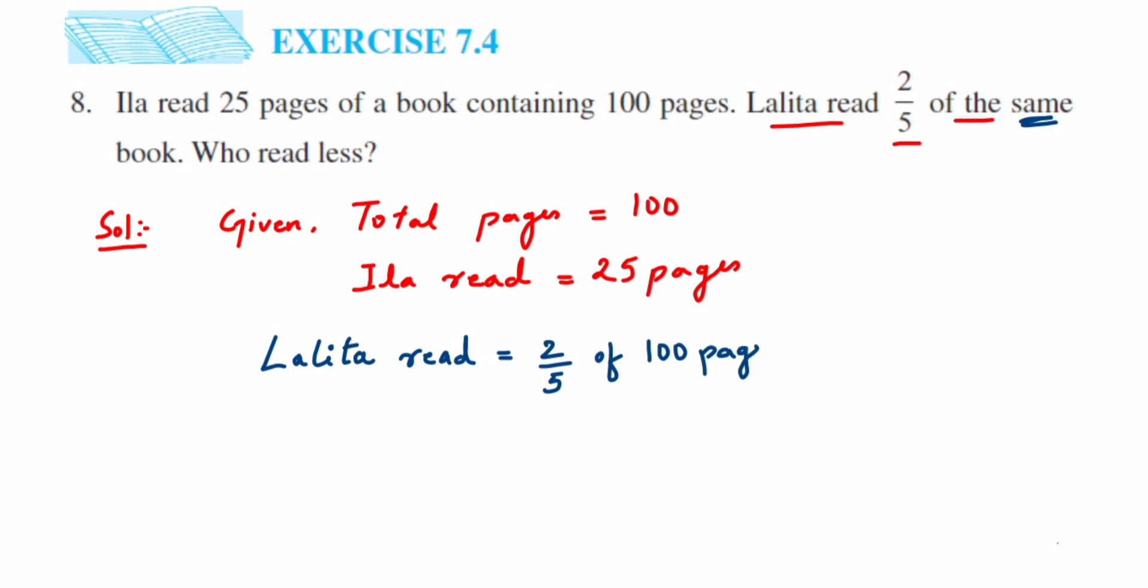Now we're going to solve this. We know that 'of' is nothing but multiplication. So two-fifths of means two-fifths, or 2 upon 5, multiplied by 100. Here we can cancel 5 and 100: 5 ones and 5 twenties. Now multiply the numerator: 2 times 20 is 40. So it's 40 pages.